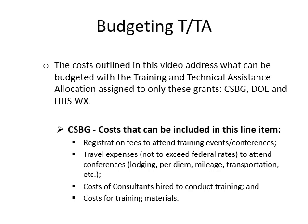For the CSBG grant, the costs that can be included in this line item include registration fees to attend training events or conferences, travel expenses not to exceed federal rates to attend conferences — the lodging, the per diem, the mileage, the transportation, etc. — and the cost of consultants hired to conduct training and cost for training materials.